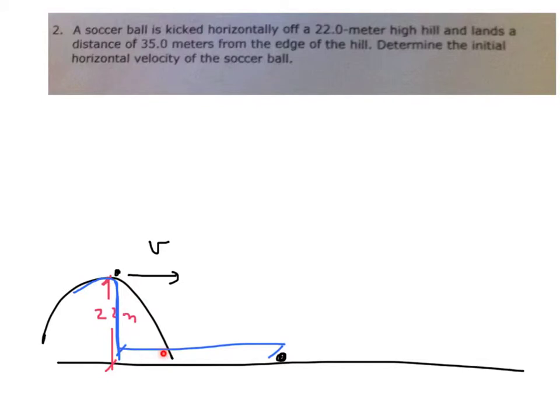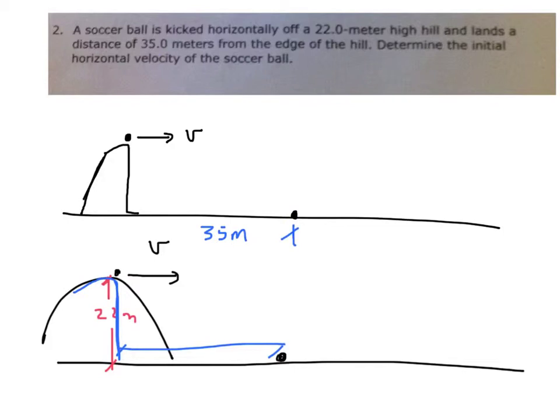So you're going to have to make an assumption about the shape of the hill. My assumption that I'm going to make is to really simplify this. I'm going to say the hill looks like this. It's a cliff. The ball goes directly out like this at some unknown velocity. It drops, hits the ground 35 meters away. From the edge of this hill, measured horizontally, and the hill itself is 22 meters high.